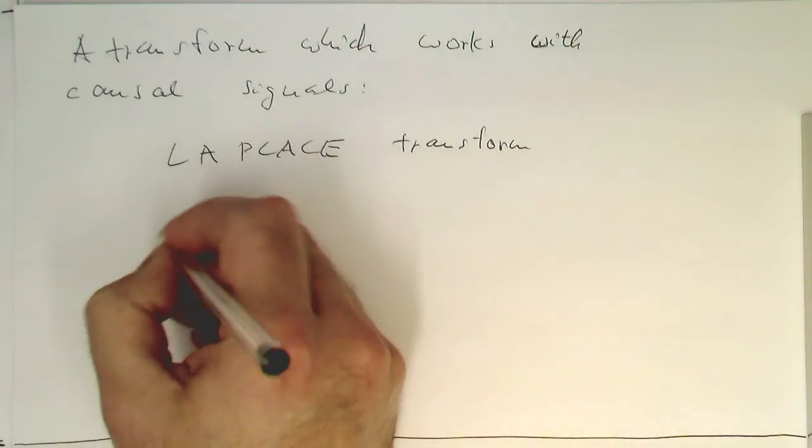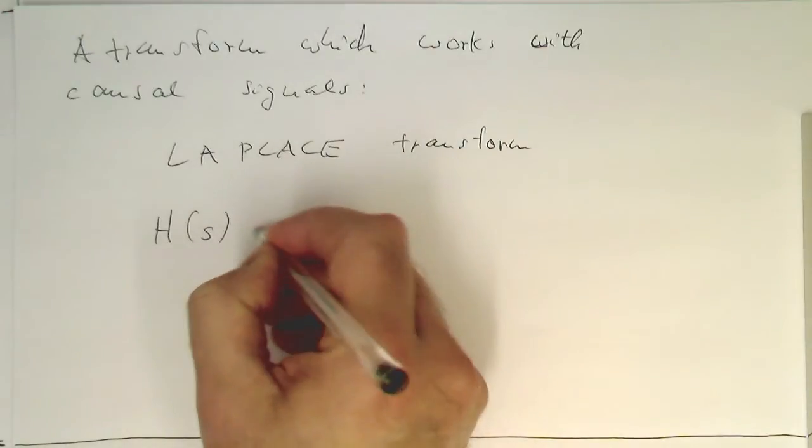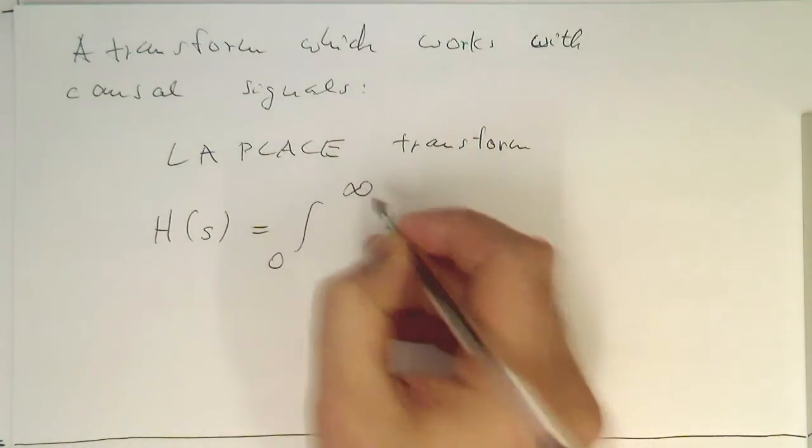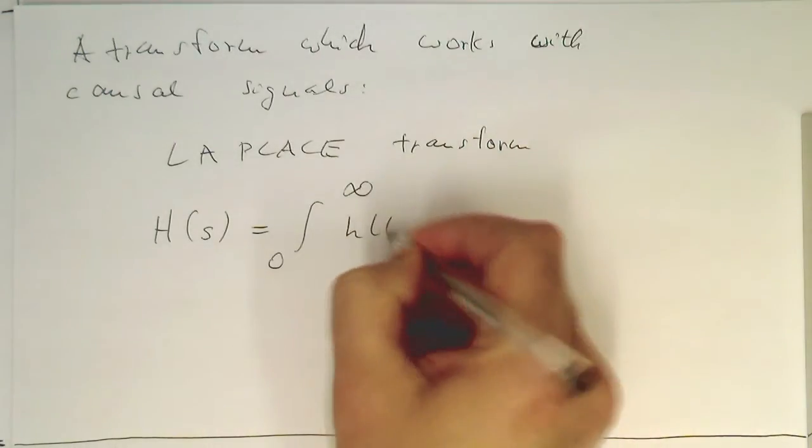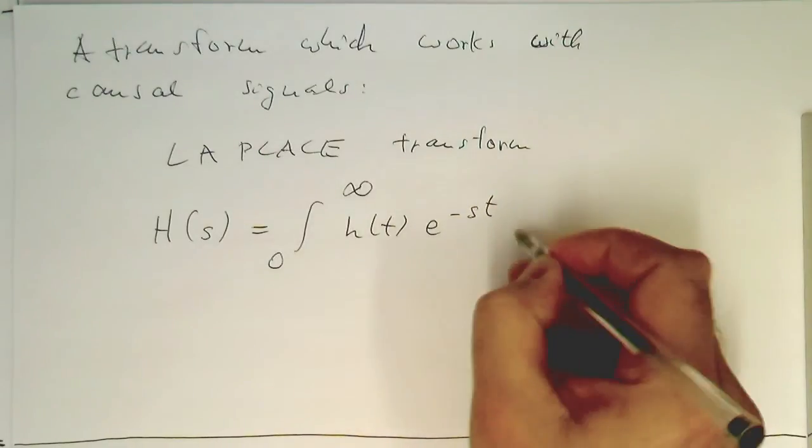This is defined as H of s - we don't have a frequency here. The integral runs from 0 to infinity: h of t times e to the st dt.